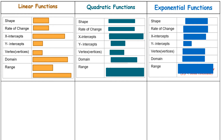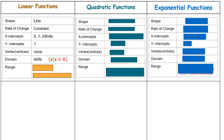Let's compare more key features. The shape of a linear function is a straight line; the rate of change is always constant. A linear function can have zero, one, or an infinite number of x-intercepts, and it has exactly one y-intercept. It has no vertex because the graph never changes direction — it keeps going in the same direction.